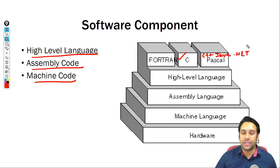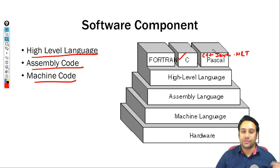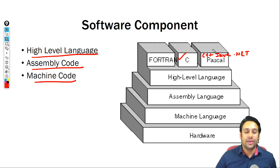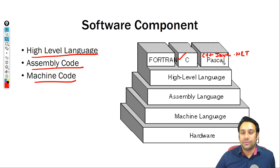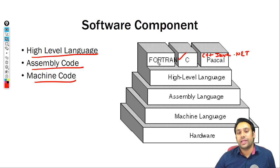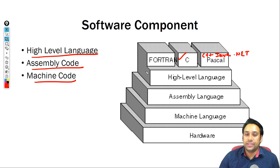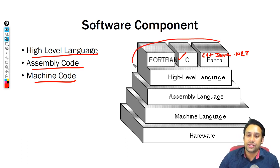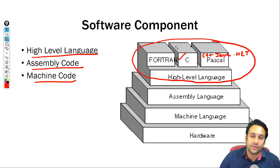Nowadays we call it the .NET framework, but earlier we used to have C# .NET, which is a language, and we used to have VB .NET, which was also a language. So all of these things represent your high level language.